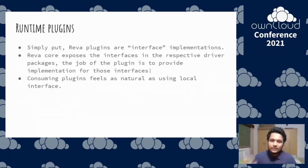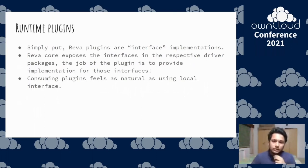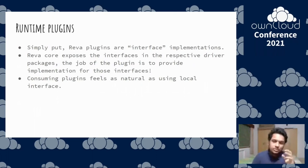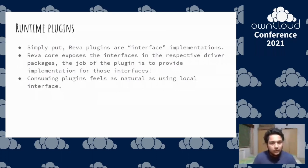What we envisioned runtime plugins would look like is simply an interface implementation. The Reva code would expose interfaces, or specifications. So if you want a storage plugin, Reva exposes some storage specifications — you should have the following methods for the storage backend — and all a plugin needs to do is have those methods and write your own custom logic in them. It should feel just like using a local interface, as it existed before.